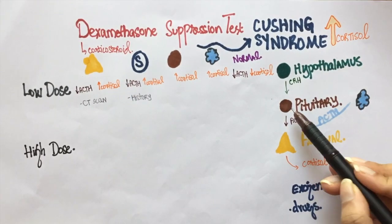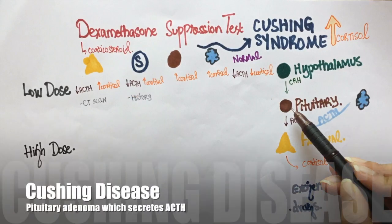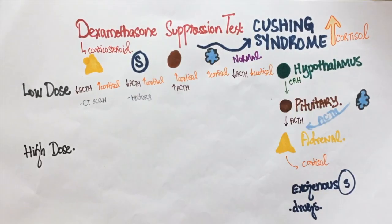Cushing's syndrome can also be caused due to an issue at the level of the pituitary. This is typically going to be a pituitary adenoma that makes a lot of ACTH — this is called Cushing disease. This ACTH stimulates the adrenals resulting in a lot of cortisol. Since this ACTH is produced by an adenoma, low-dose dexamethasone does not suppress it. Hence, in such cases, both ACTH and cortisol levels will be high despite the negative feedback exerted by low-dose dexamethasone.